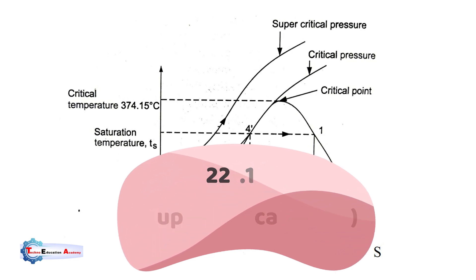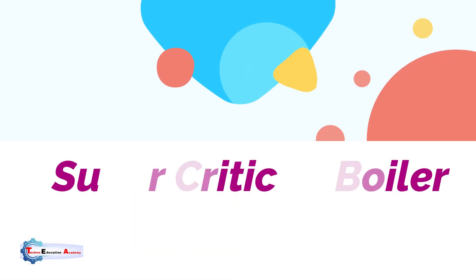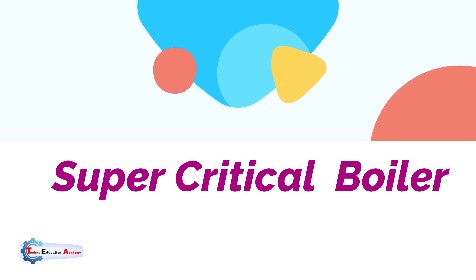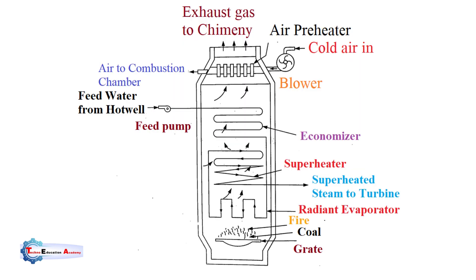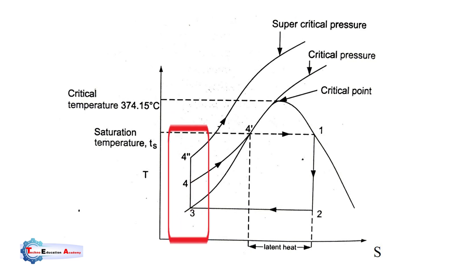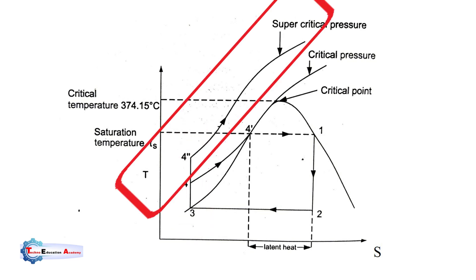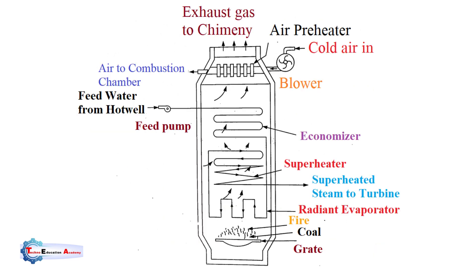Supercritical means above 221.1 bar and subcritical means the pressure range is below 221.1 bar. Now we will discuss the working principle of the supercritical boiler. Through the feed pump, the pressure of water is increased above the critical pressure. On the T-S diagram, the process is represented by 3-2-4 double dash — it is then heated and temperature increases during the process, with heat supplied at constant pressure. Here you can see the schematic diagram of the supercritical boiler.